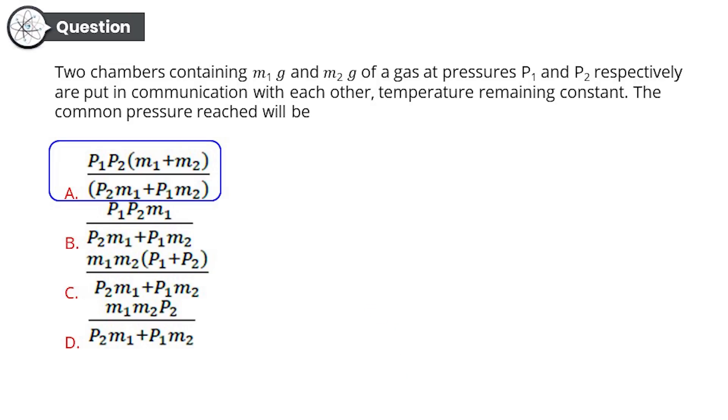The correct answer is option A: P₁P₂(M₁ + M₂)/(P₂M₁ + P₁M₂). If you're getting confused still about P's and M's, here is the solution. Have a really, really damn close look. You'll get it right. Good job.